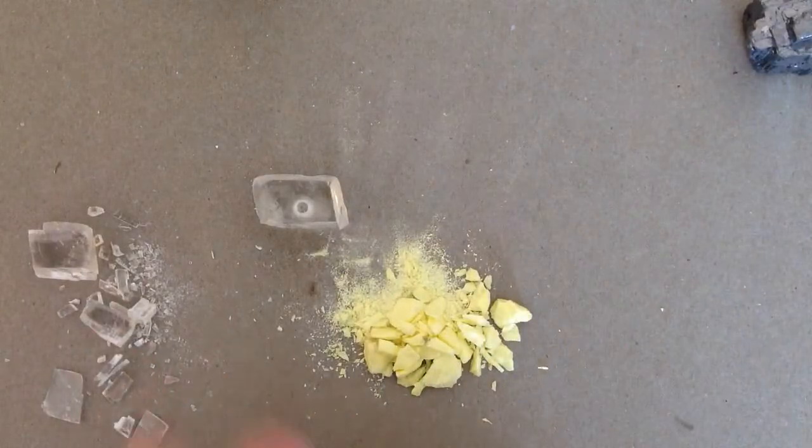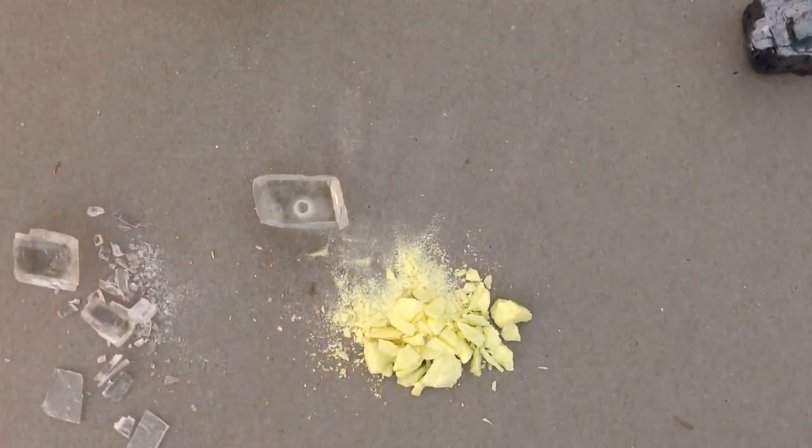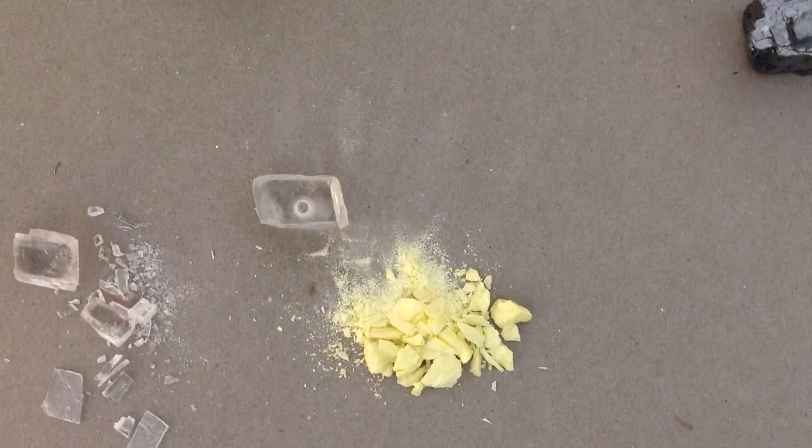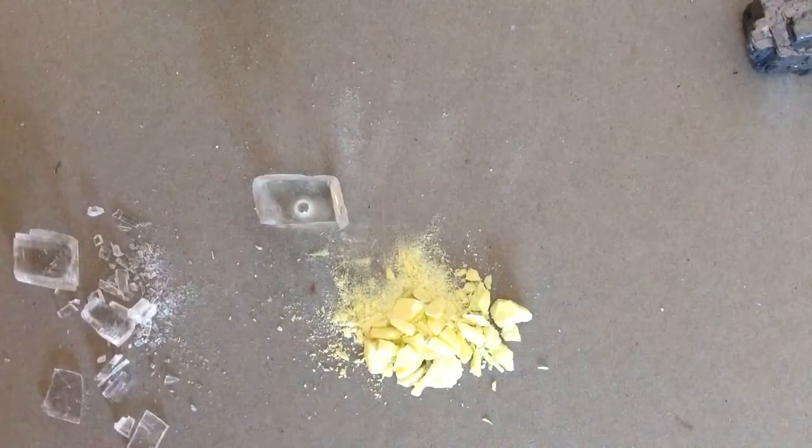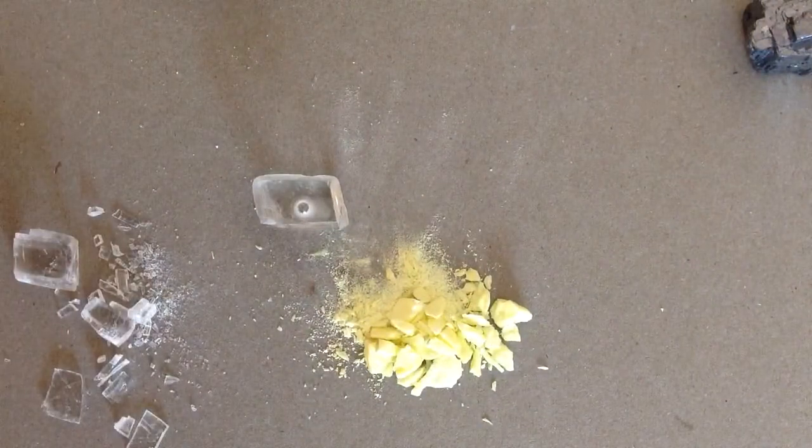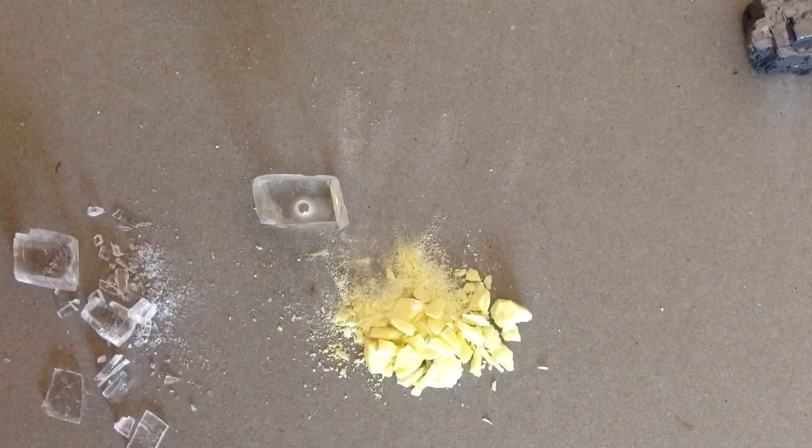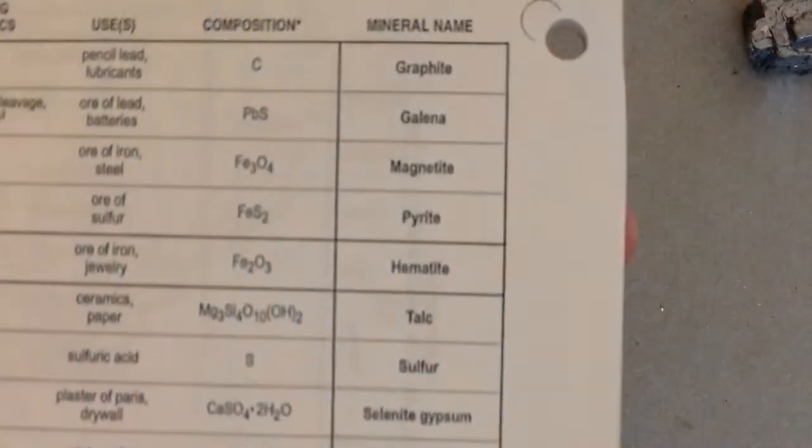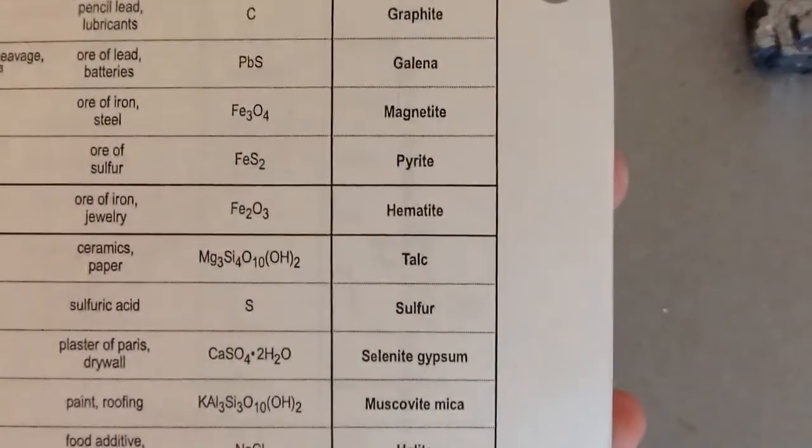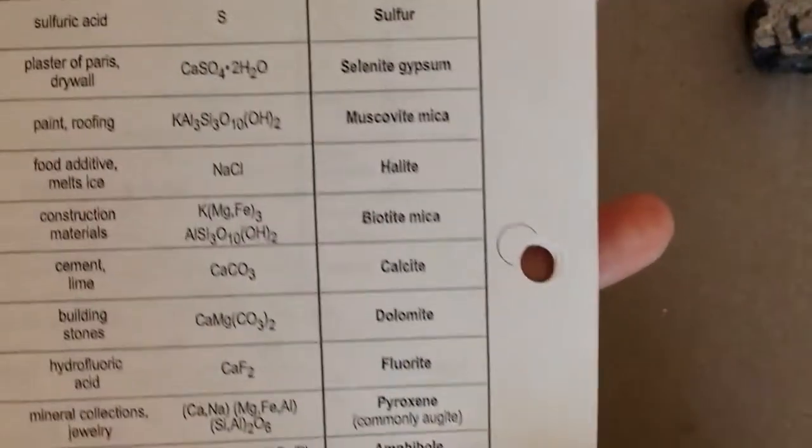Another neat property of calcite is that it has a property called double refraction. And what that means is, let me see if I can demonstrate this for you. So let me just get the reference table up. And I'll get the word calcite.